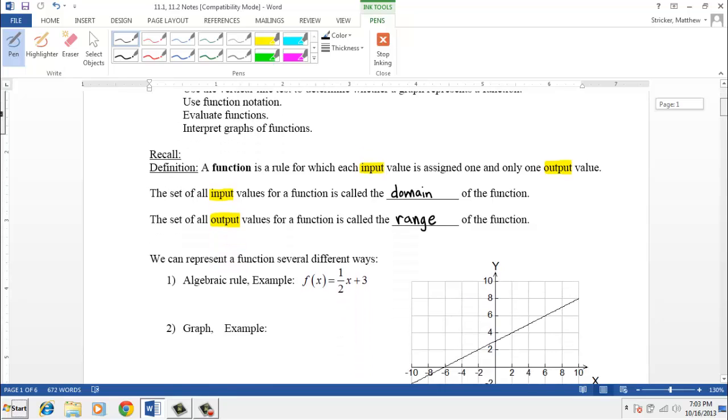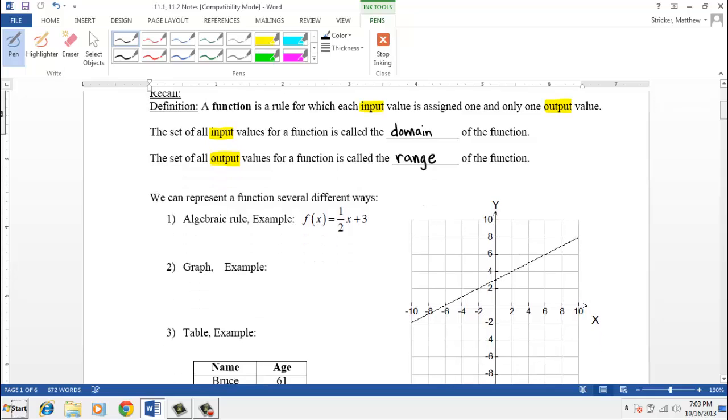And functions can be represented in different ways. One of the first ways that we see functions represented is as an algebraic rule. Like this function takes each input value x, first multiplies it by one half, and then after multiplying by one half, we add three to that value. That is an example of a type of function.